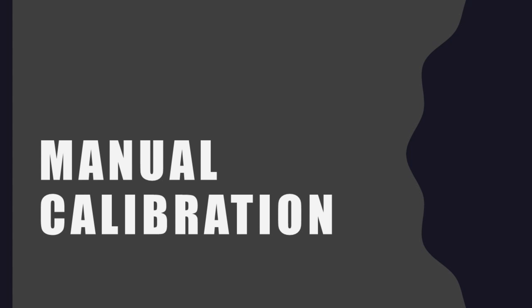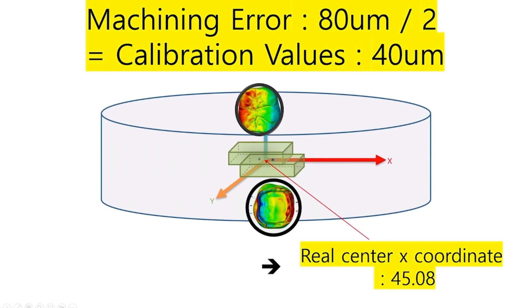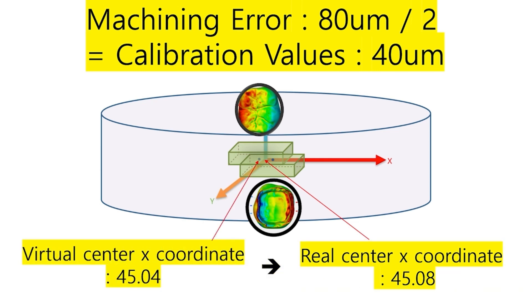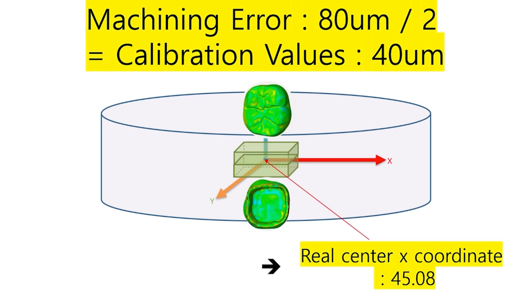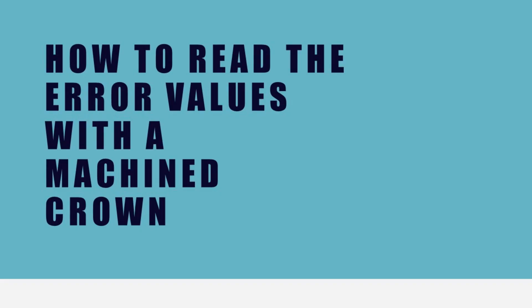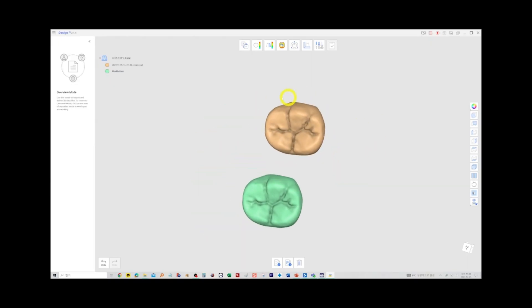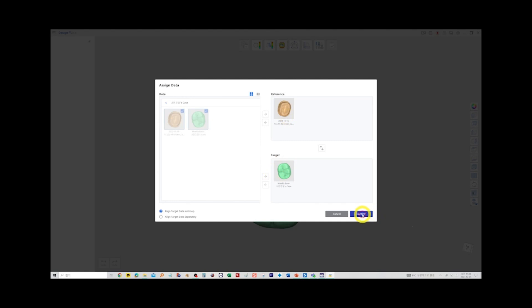There are two ways to fix off-center issues: one is manual, and the other is automatic. For the machine in the previous example, if the machining error is 80 micrometers in the x-axis direction, the coordinates are off by half of this value at 40 micrometers. Entering this value as a correction into the machine's software will correct it. In the previous method of checking for machining errors, we used auto-align to scan the machined crown and align it with the design file.